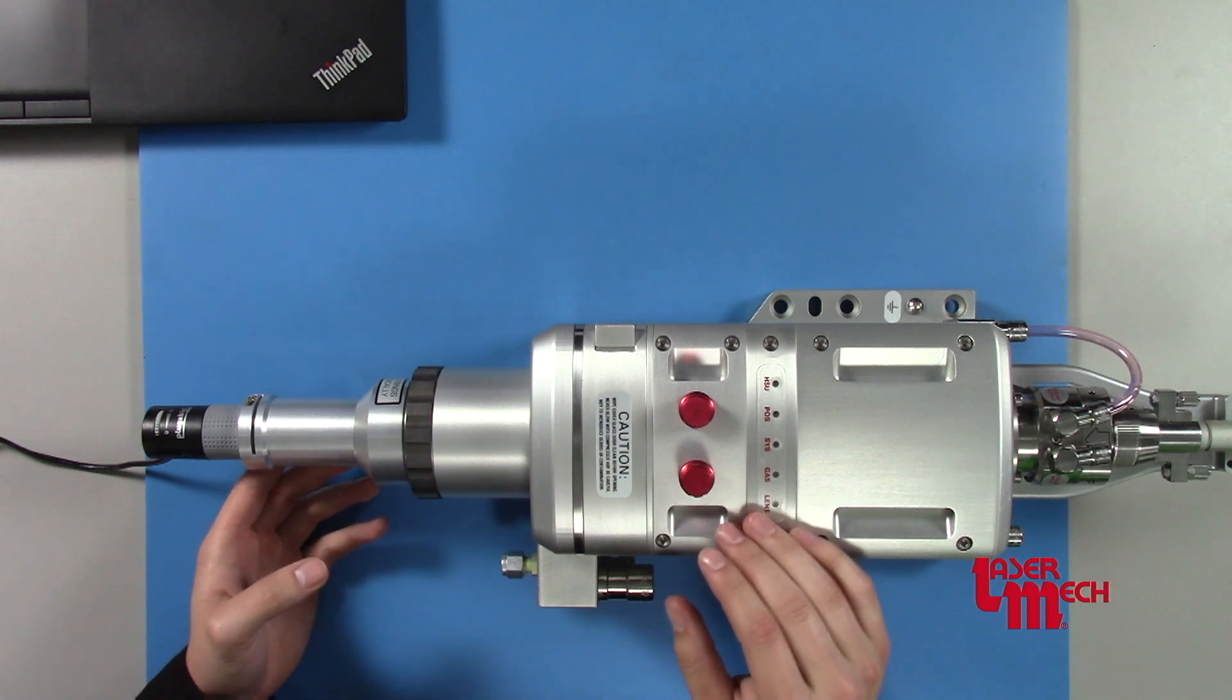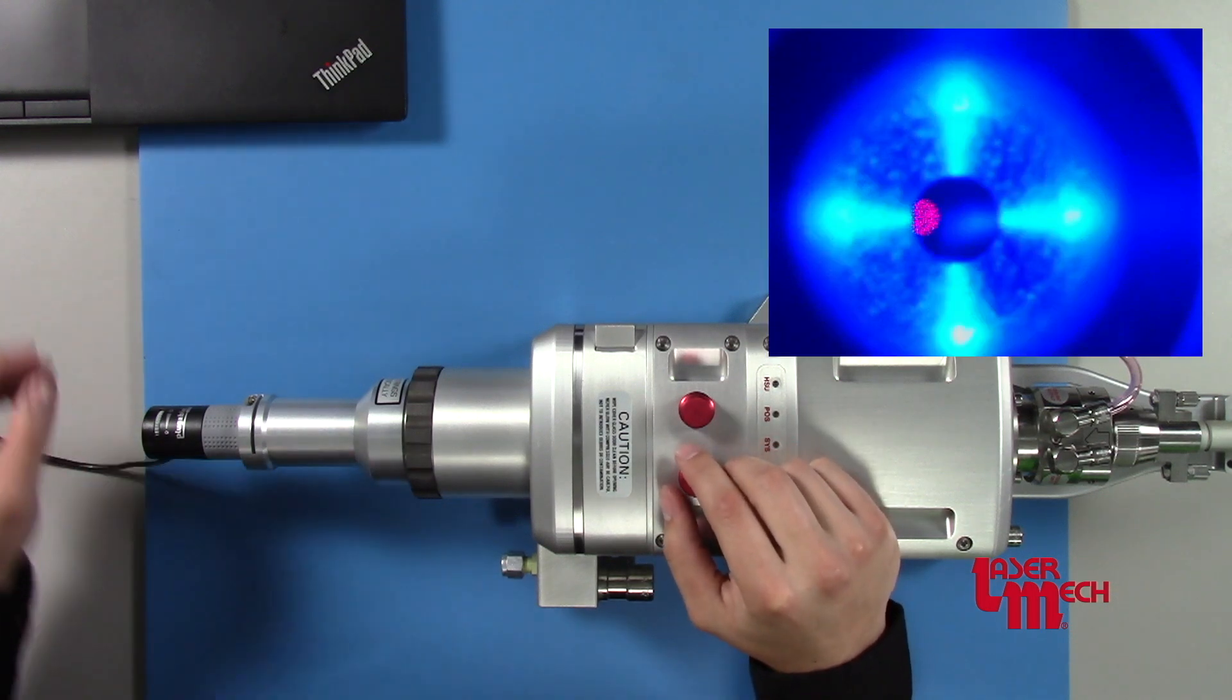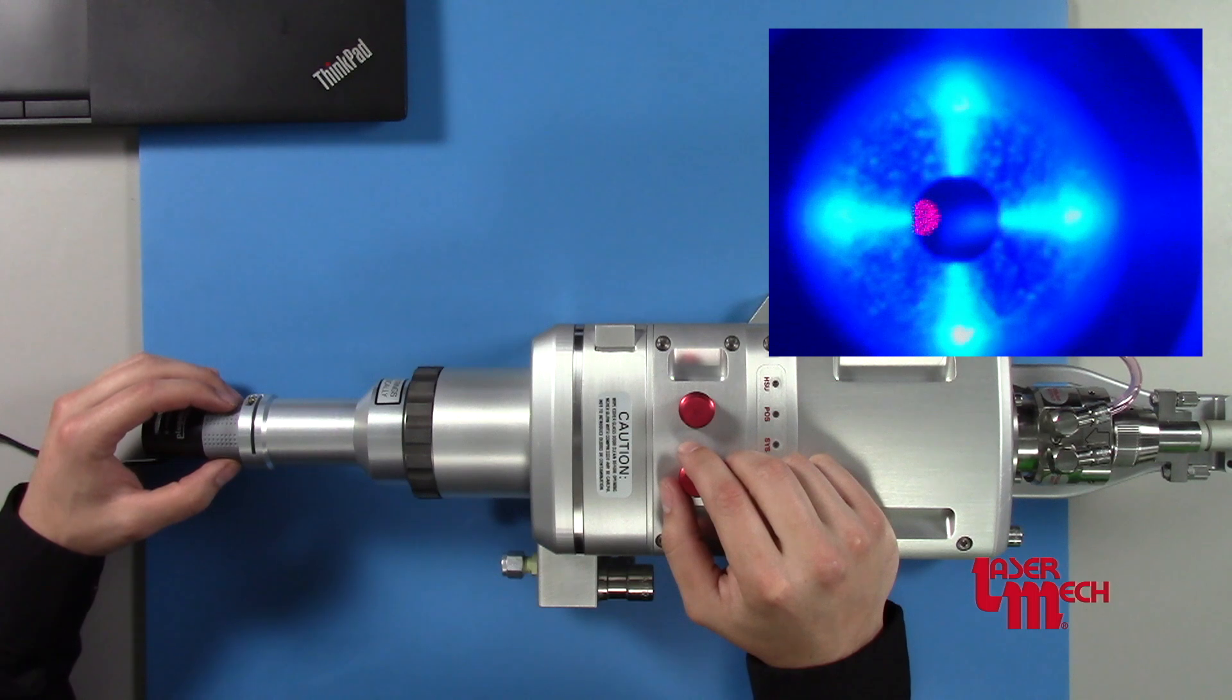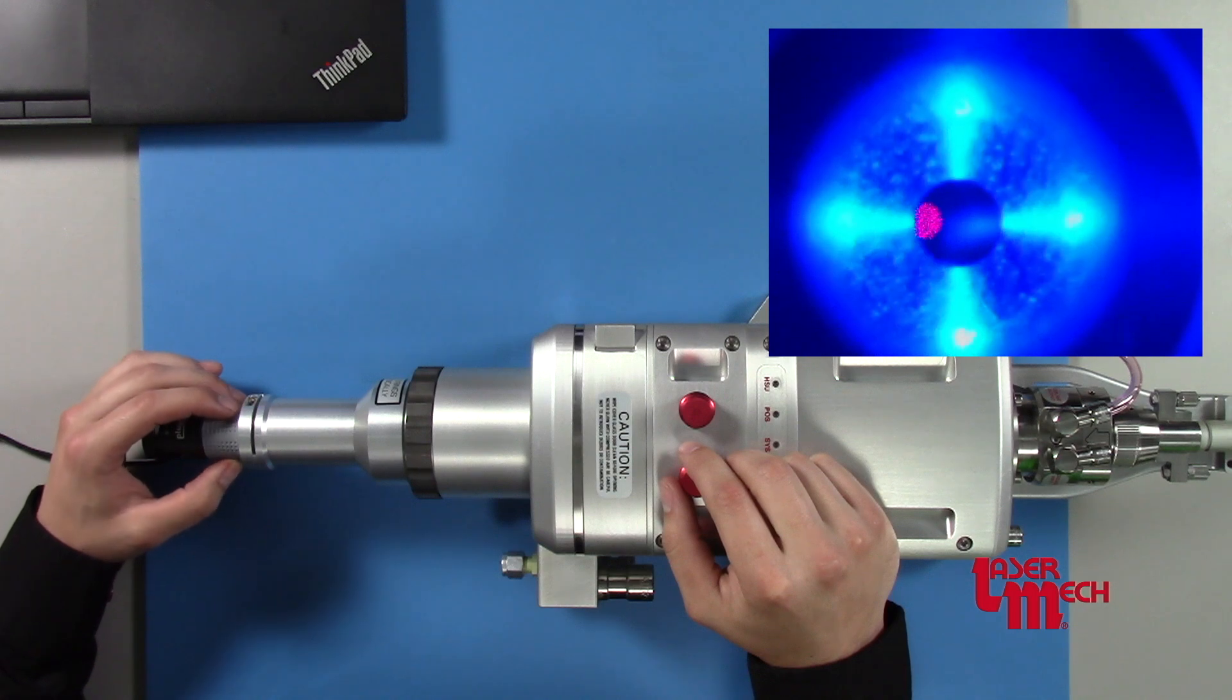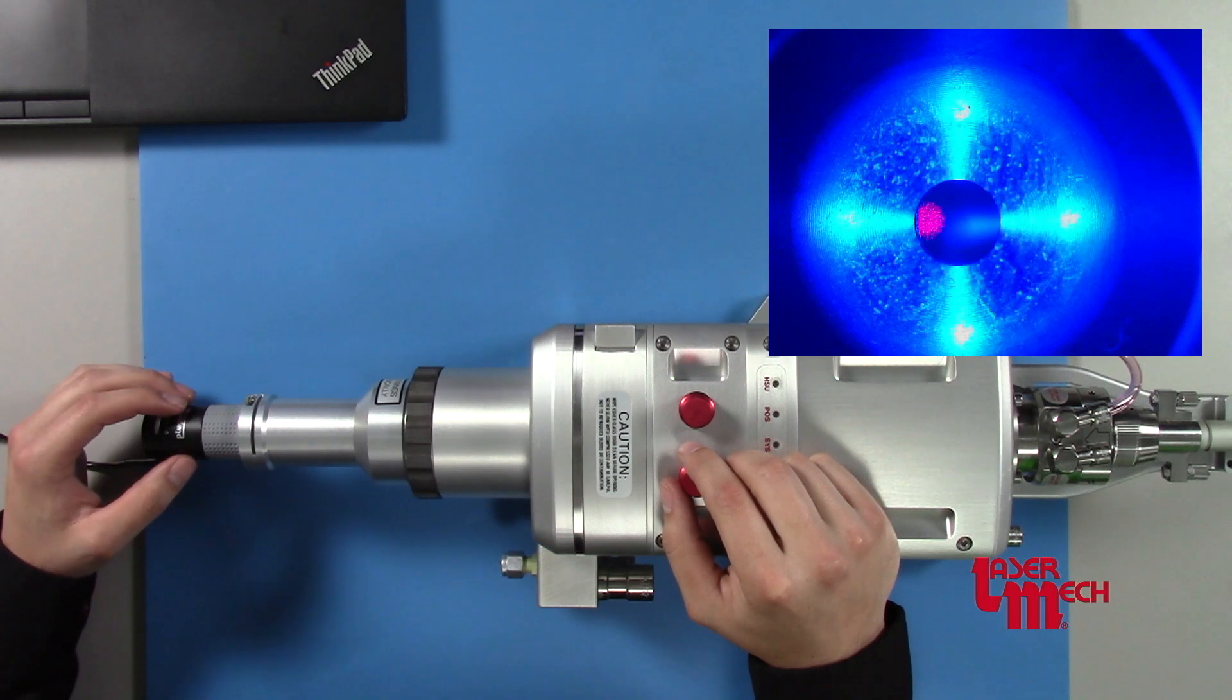With your camera in place, you can go over to your computer and bring up your image. You can adjust the camera itself for focus. As you can see, you can go in and out of focus. You want to find the sweet spot where your nozzle and your beam look good.